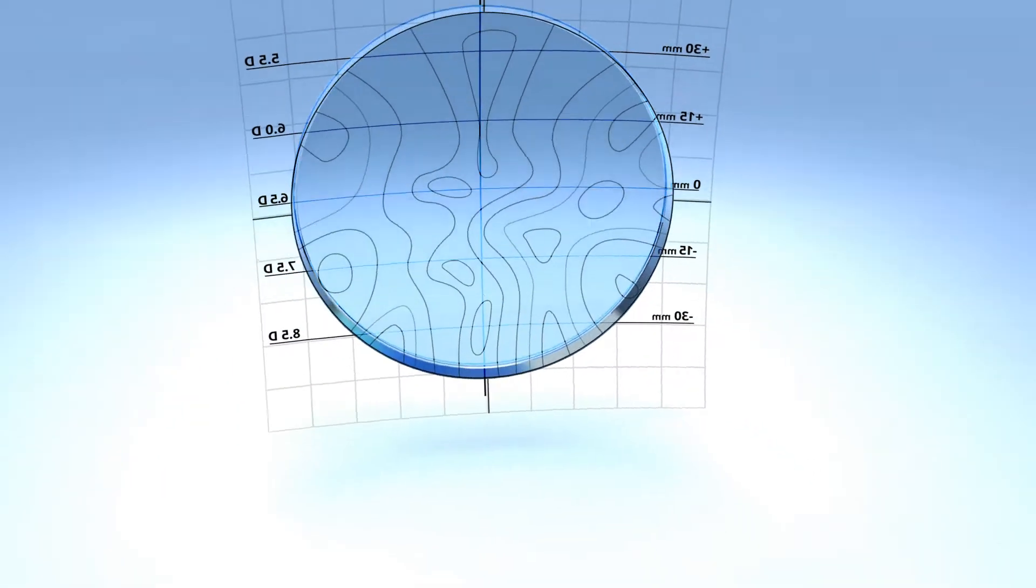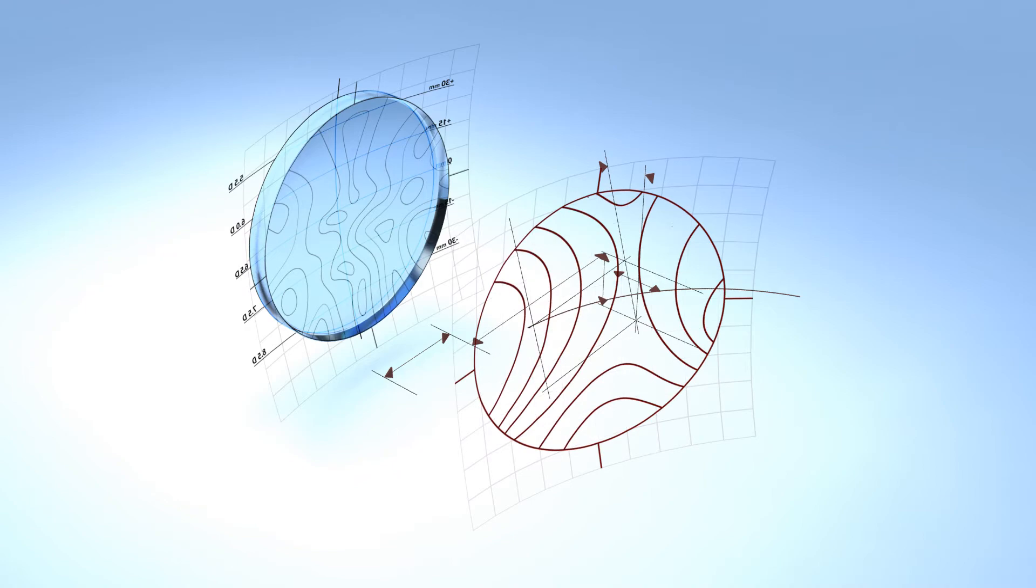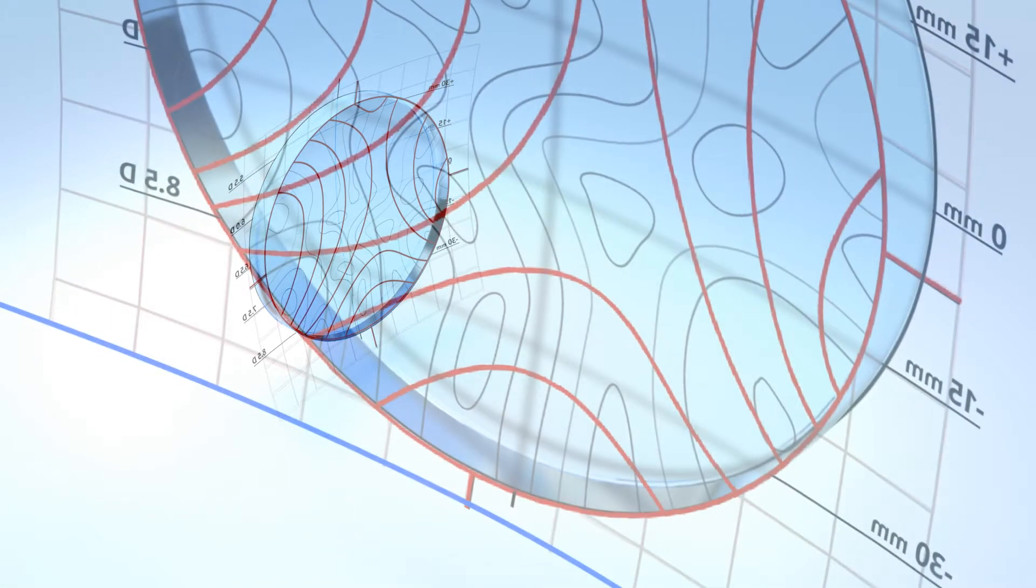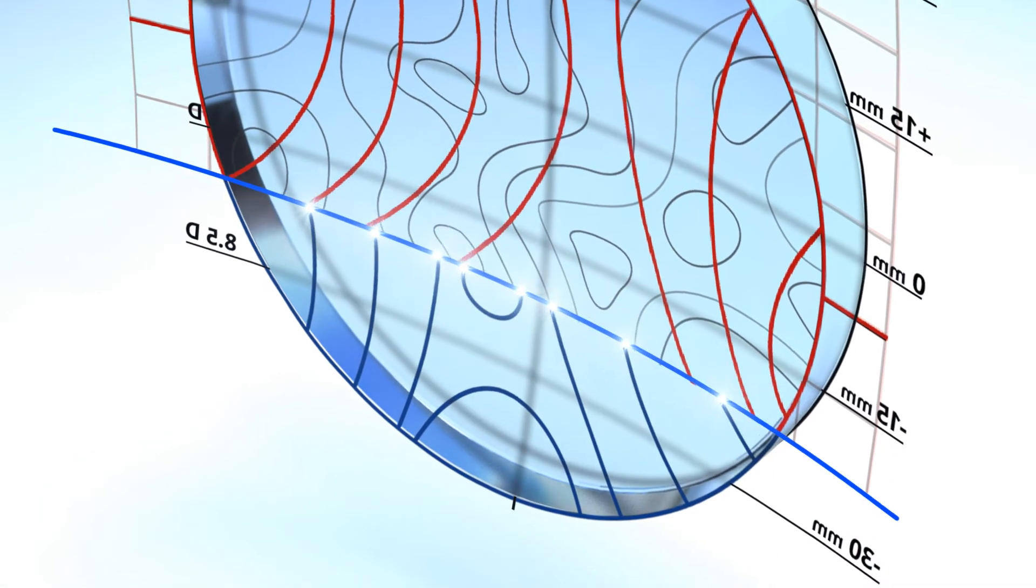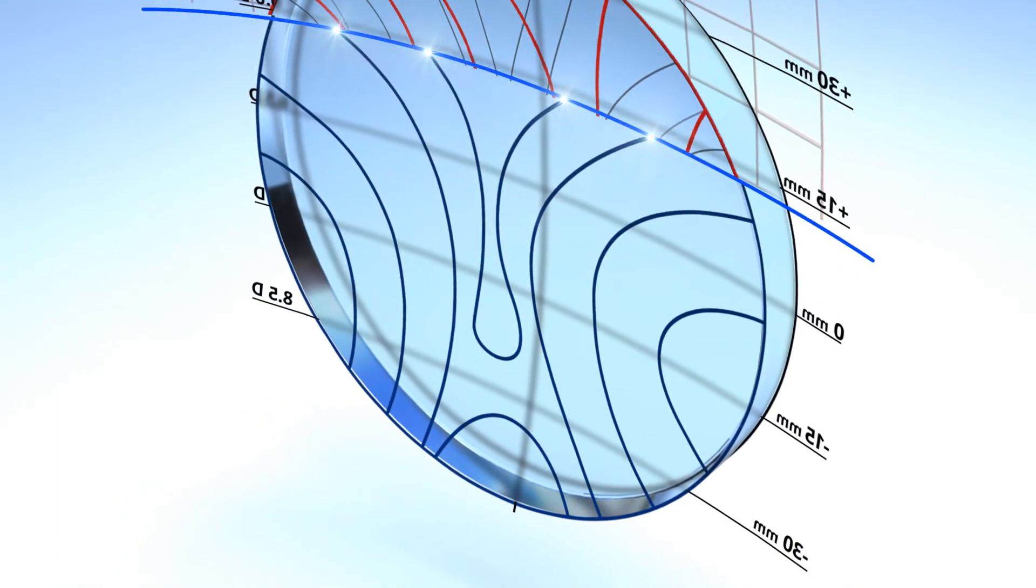The back surface design is further enhanced when desired by a complete set of individualization parameters. The digital design combined with the individualization parameters are processed together on the back surface of the lens.